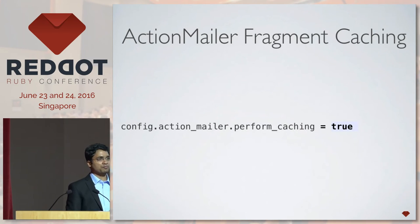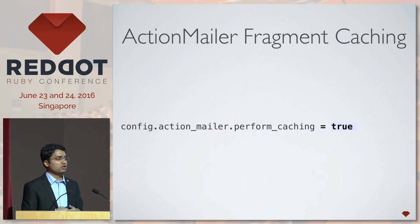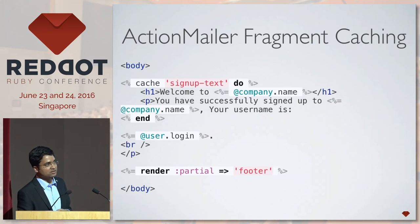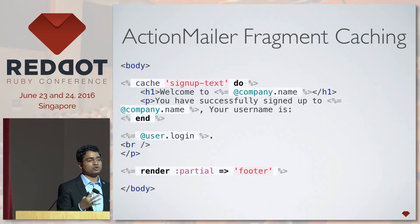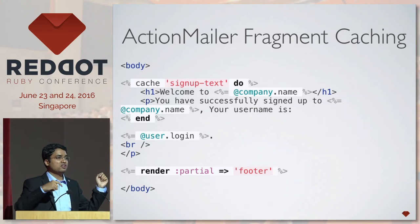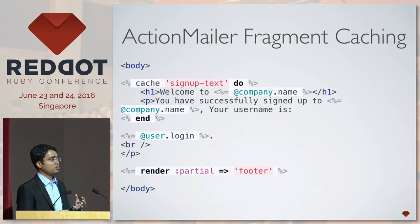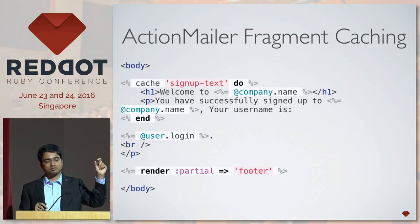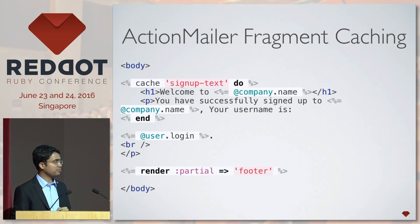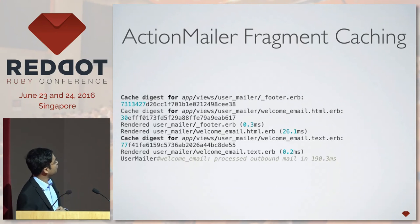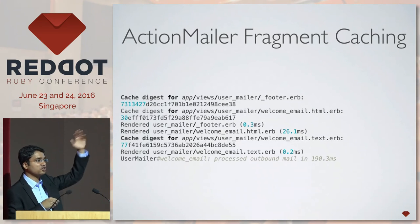The next addition is action mailer fragment caching. Now you can use caching in your mailers — enable it with 'perform_caching: true' for action mailers. Then in your mailer views you can do 'cache do' blocks around dynamic parts. This is useful because in your mailers you don't have to spend time pre-computing all values for parts that are just going to be dynamic. You can see in the logs that it fetches the cache digest for that particular part of your mailer.